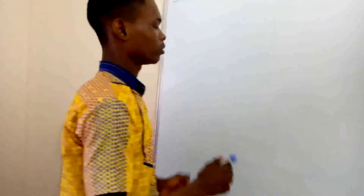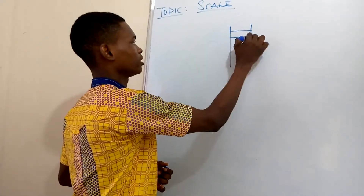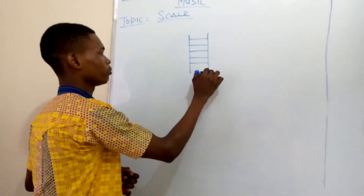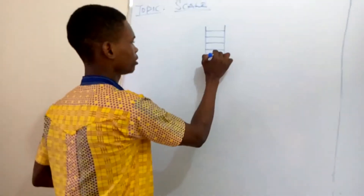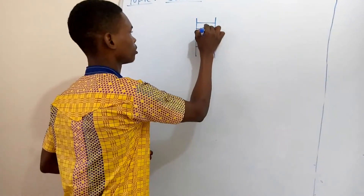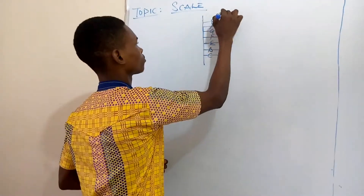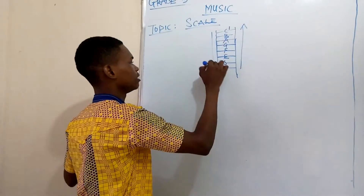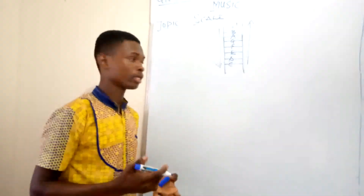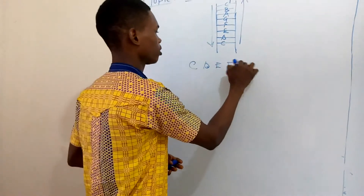So what do we mean by the word scale? A scale is a ladder of notes. Scale can be defined as a ladder of notes which are arranged in ascending or descending order — a series of notes arranged alphabetically from a note to its octave.